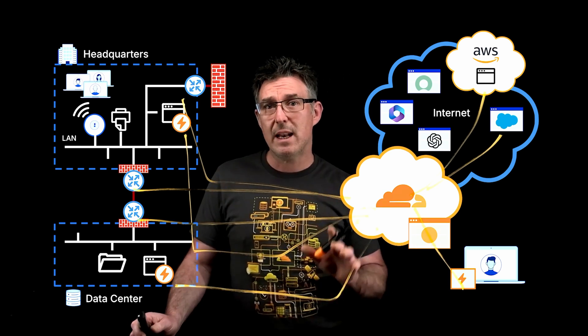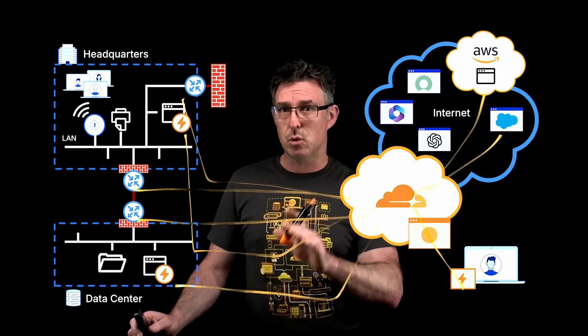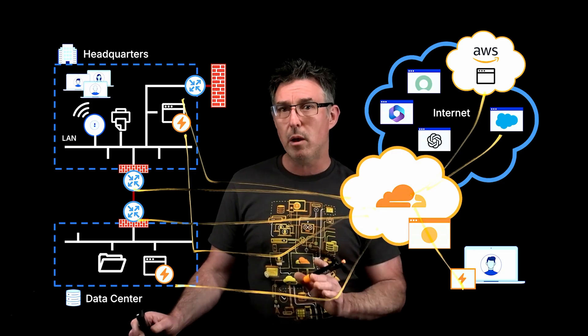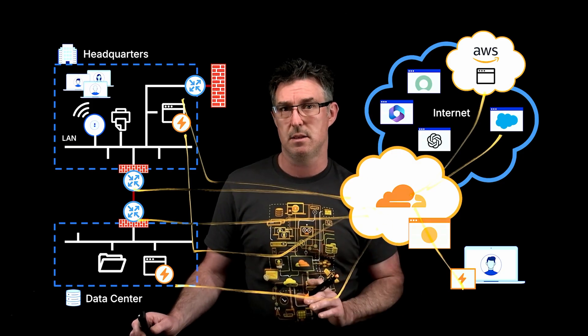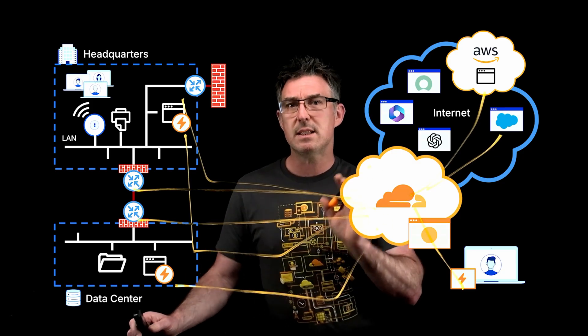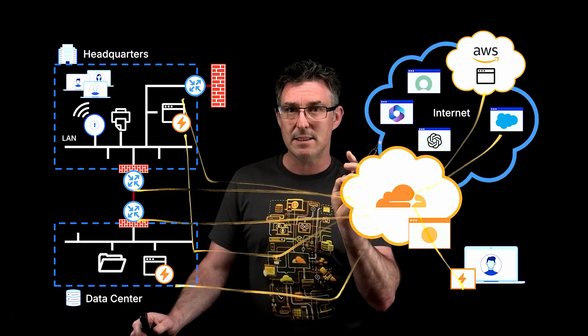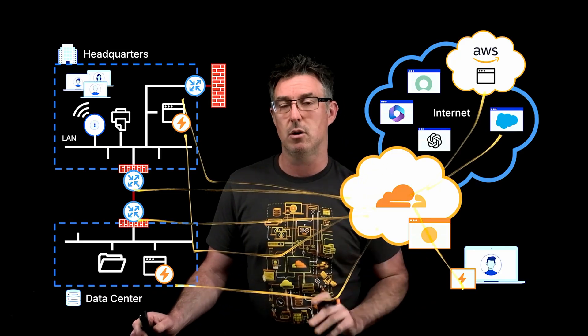With connectivity sorted between people and resources, it's time to examine the policies we can build to define access. Policies typically involve three things: identity, device, and traffic context.